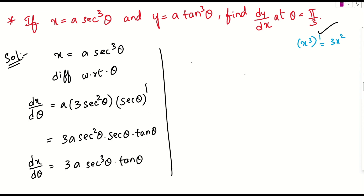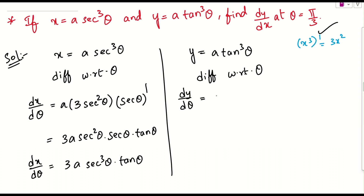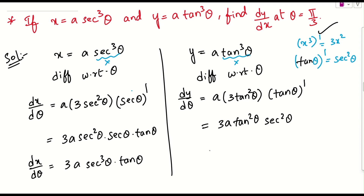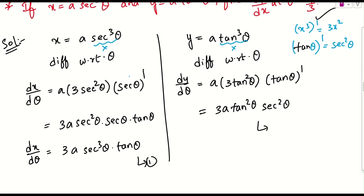Now look into y. What is y given? That is a into tan cube theta. Differentiate this function with respect to theta on both sides. dy by d theta — a is constant, we can take it out. This is again in the form of x cube. Taking tan as capital X, the derivative gives 3 into tan square theta, and the internal derivative of tan theta is secant square theta. So dy by d theta is nothing but 3a tan square theta into secant square theta. Take this as equation 1, and dx by d theta as equation 2.